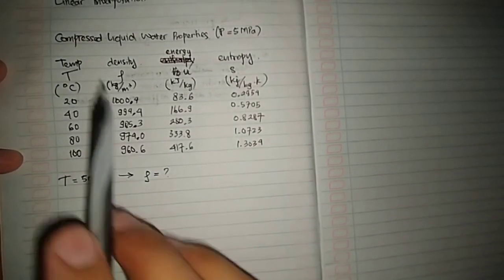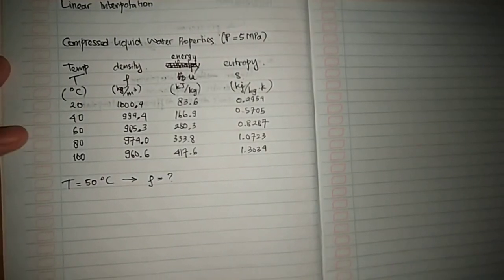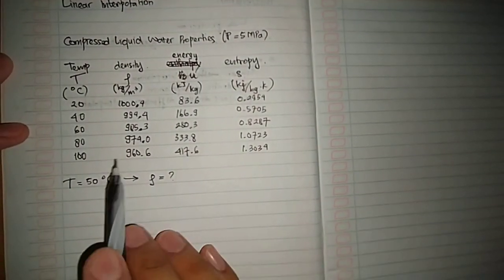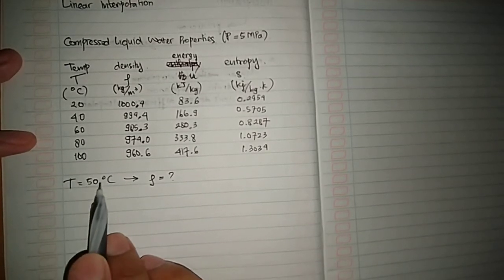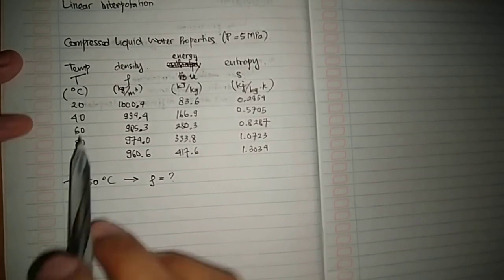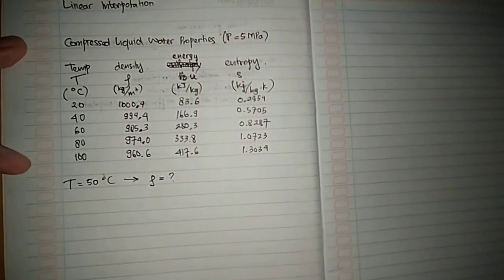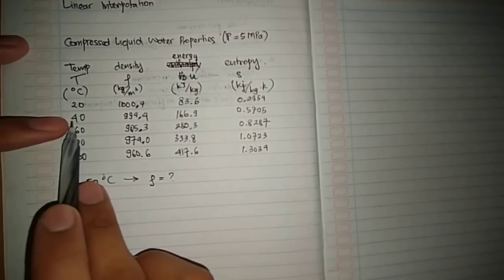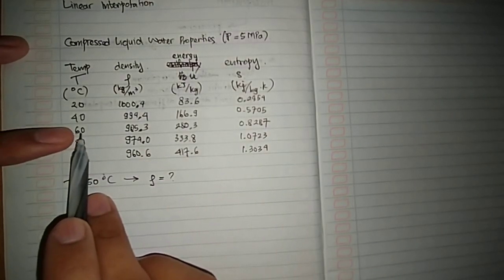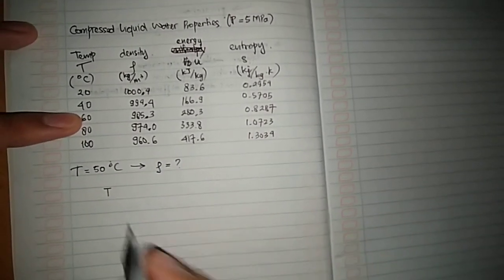So how to find this? Now we are going to do linear interpolation. The first step: this number, the temperature, will be in here. Number 50 is located between 40 and 60. So we are going to make something like this: 40, and then 60.